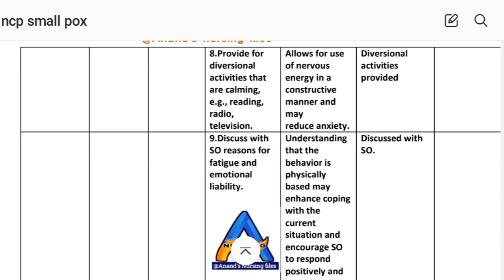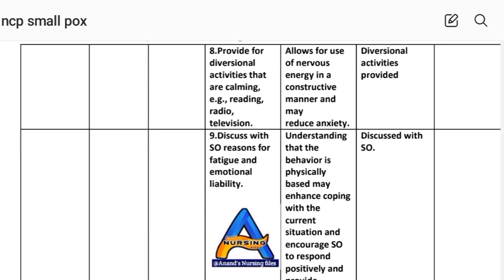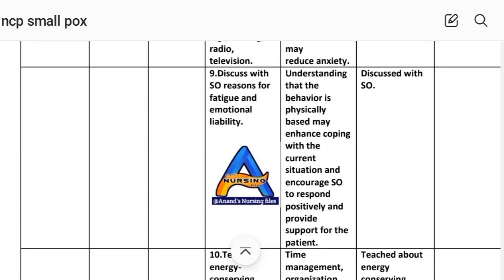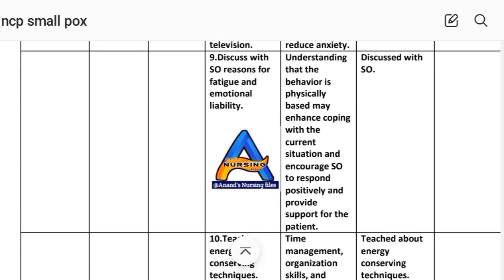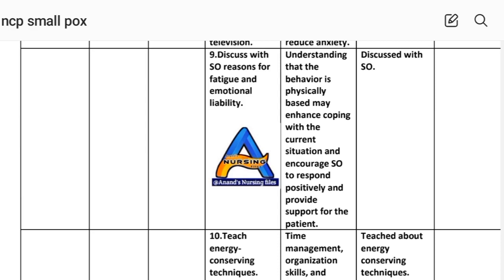Intervention number eight: provide diversion activities that are calming — for example reading, radio, television. Rational: allows use of nervous energy in a constructive manner and may reduce anxiety. Implementation: diversion activities provided as needed. Intervention number nine: discuss with significant others the reasons for fatigue and emotional lability. Rational: understanding that the behavior is physical helps with coping and creates a positive support response for the patient.